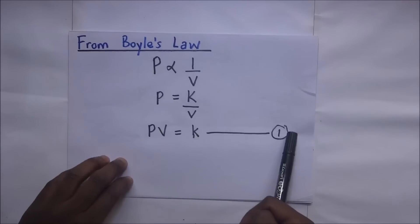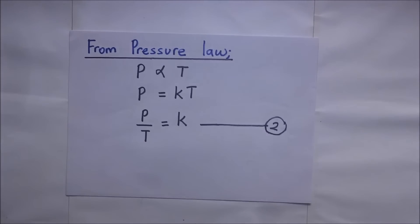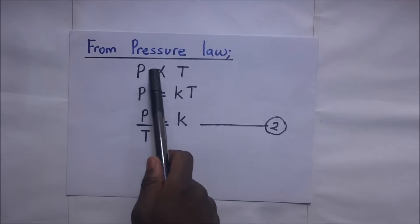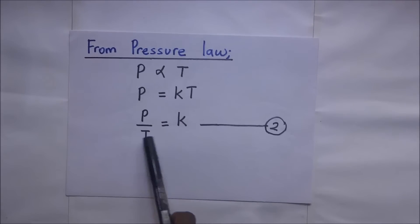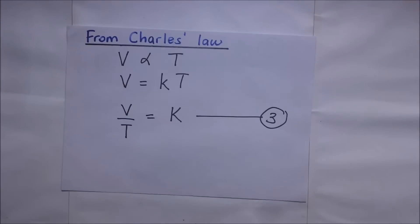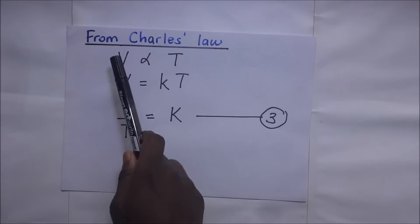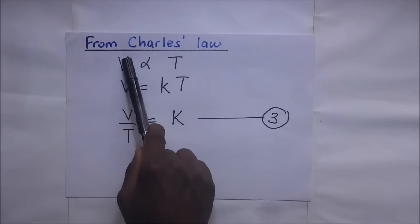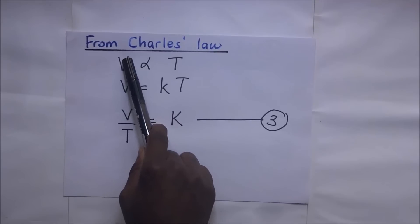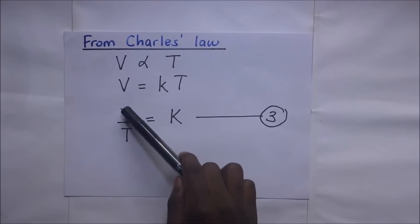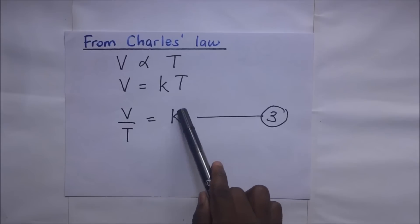Then we have the expression for the pressure law that pressure is directly proportional to the temperature, and this concludes that P over T gives us a constant K. This is our second equation. Then we have our third equation: that volume of a gas is directly proportional to the absolute temperature, and V over T is going to give us K.